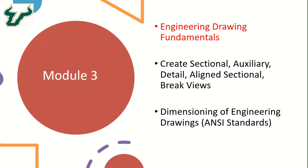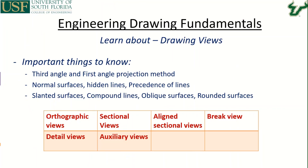Let's get started with engineering drawing fundamentals and do a quick review of the basic fundamentals used in engineering drawing. We will specifically look at the difference between third angle and first angle projection methods, the different types of surfaces and edges such as normal, slanted, oblique, and rounded surfaces, hidden lines, precedence of lines, and compound lines.